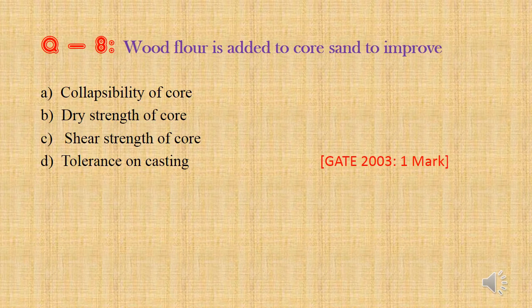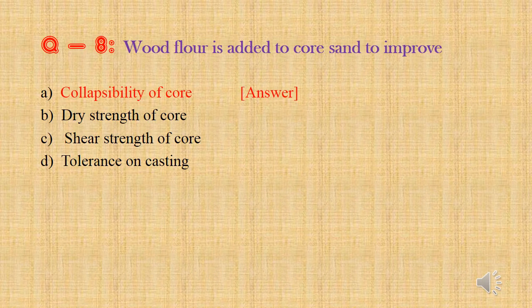Question 8: Wood flour is added to cores to improve — Option a: Collapsibility of core, Option b: Dry strength of core, Option c: Shear strength of core, Option d: Tolerance on casting. We have seen that wood flour is used to improve collapsibility. So the answer is Option a: Collapsibility of core.